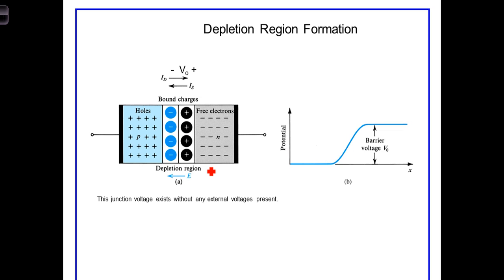The bound and thus separated positive and negative charges establish a voltage known as the barrier voltage, or junction voltage, V sub-zero. It's referenced as shown, plus to minus. This junction voltage is the result of diffusion and exists without any external voltages present.